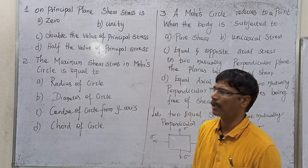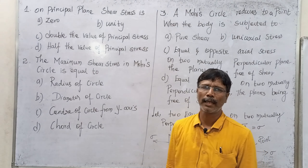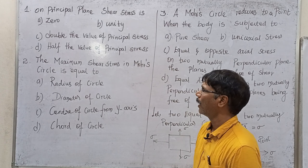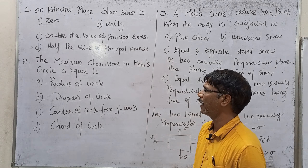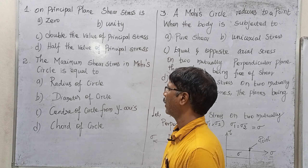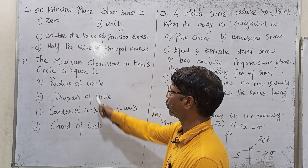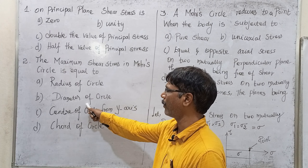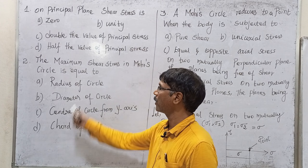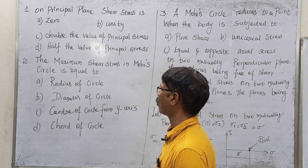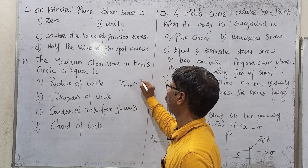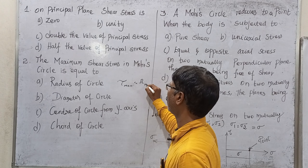Maximum shear stress in the Mohr's circle — where are we? Tau max is the radius of the Mohr's circle. So we have radius of circle, diameter of circle, center of circle, chord of circle. Maximum tau max is equal to the radius of the Mohr's circle.